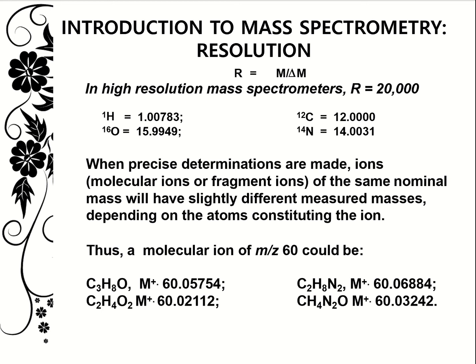When precise determinations are made, ions or molecular ions or fragments of the same nominal mass will have slightly different measured masses depending on the atoms constituting the ion. So a molecular ion of mass-to-charge ratio 60 could represent several different molecular formulas — using regular integer masses they all sum to 60, but using a high-resolution mass spectrometer we are able to distinguish between all four molecular ions.